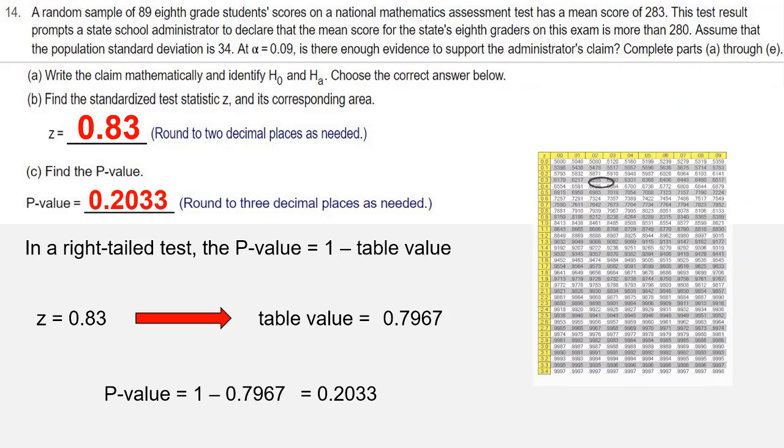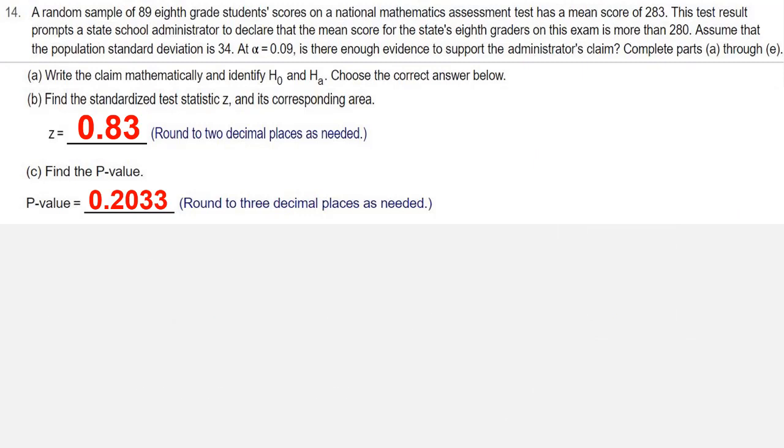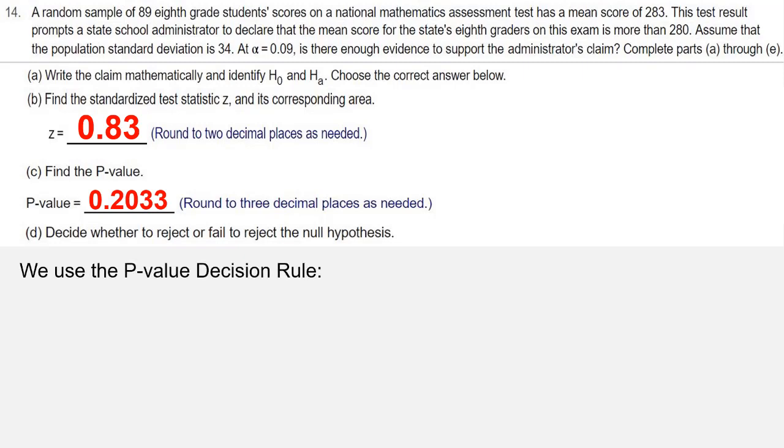Part D asks us to decide whether to reject or fail to reject the null hypothesis. We're going to use our p-value decision rule here. The p-value decision rule says that we're going to compare the value of p to the value of alpha.